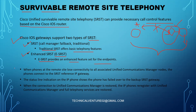When phones at the remote site lose connectivity to all associated UCM nodes, the phones connect to the SRST reference IP gateway. The status line on the IP phone shows that the phone has failed over to the backup SRST gateway — you will get a notification on your phone indicating it is backed up on the SRST. When the connection to UCM is restored, the IP phones re-register with Call Manager and full telephony services are restored.